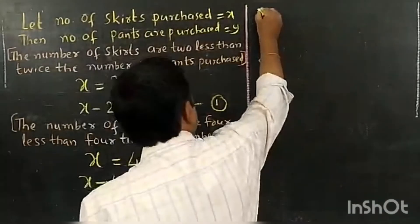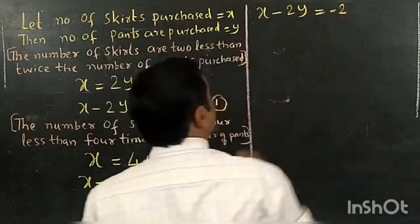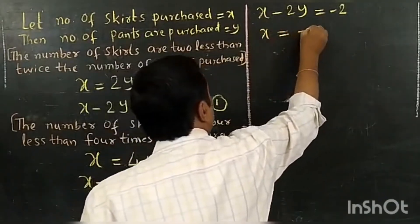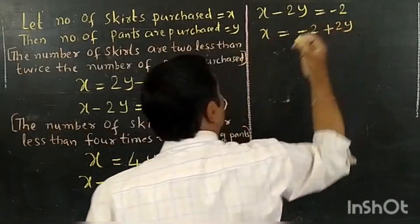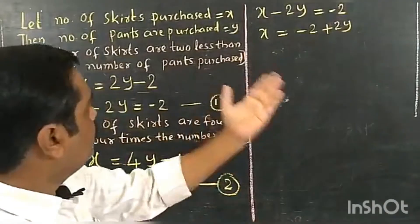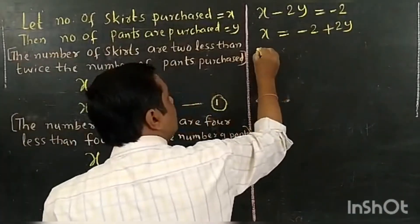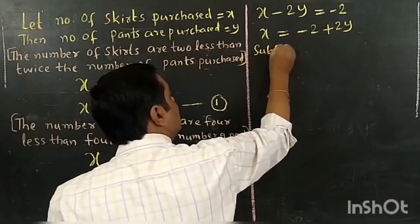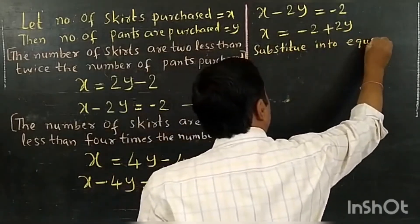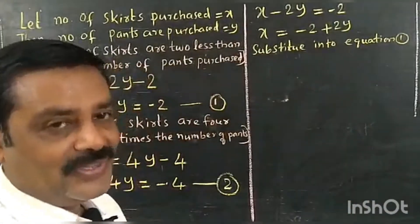The first equation is X minus 2Y equals minus 2. I am going to make X the subject: X equals minus 2 plus 2Y. I am going to substitute this into the second equation using the substitution method.